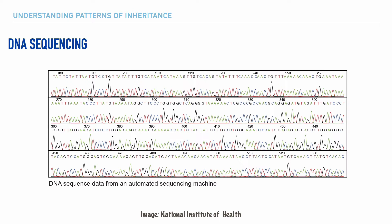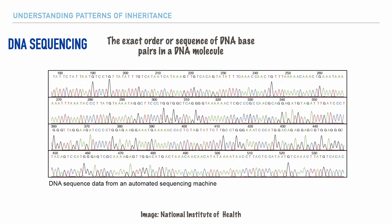By sequenced, we're essentially saying that you can get a printout of the complete sequence or order of your DNA base pairs, which could help determine if there's an increased risk to your developing hereditary conditions and whether or not you may be a carrier for certain diseases.